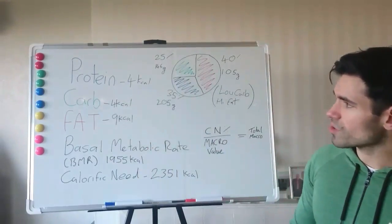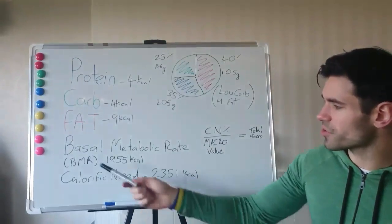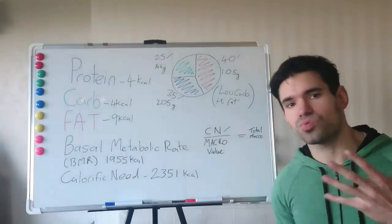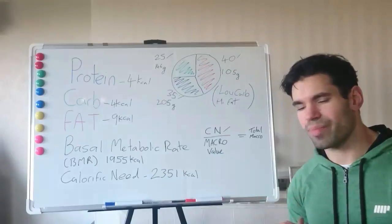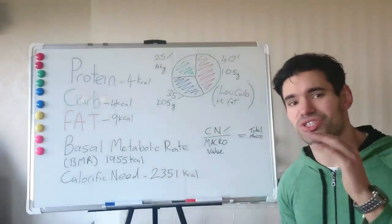So from here we understand that each of these has a value. We also need to understand that every human being has a basal metabolic rate. Your basal metabolic rate is how many calories you will burn if you were to do no exercise at all during the day. If you were to lie in bed and do nothing, your body would burn a certain amount of calories just to stay alive.